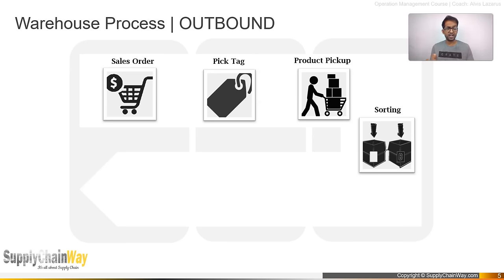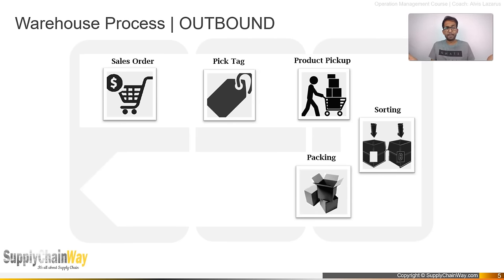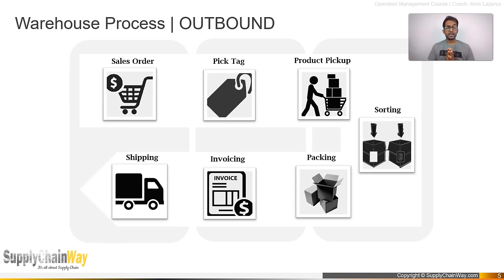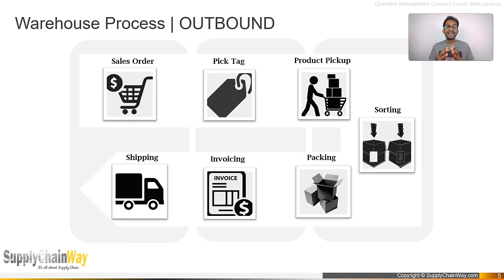There are also hybrid picking methods that will be covered in further warehousing sessions. Once sorting is completed, you do packaging — any form of external packing. After packing, you do invoicing, and then the product is shipped to the customer. A traditional practice of invoicing before picking exists in many warehouses, but it is not the right practice.